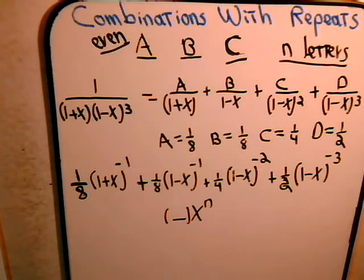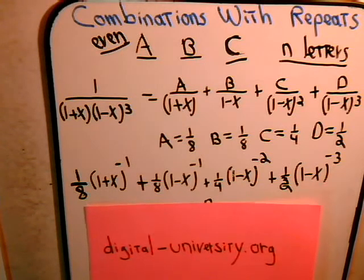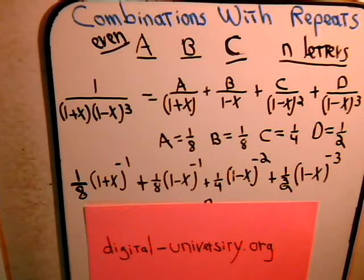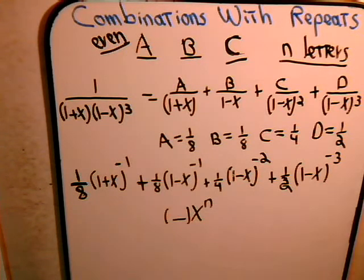Incidentally, if you just found us on YouTube, you can go to the website at digital-university.org. All the videos we have — the permutation problems, combinations, and probability problems — are all listed in their proper sequence, because what we're trying to do here is have a progression so that in each video we consider a problem that's slightly more complicated.